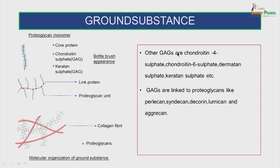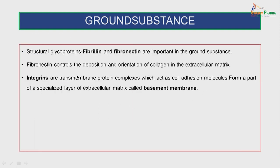Other glycosaminoglycans include chondroitin-4-sulphate, chondroitin-6-sulphate, dermatan sulphate and keratan sulphate. The glycosaminoglycans are linked to proteoglycans like perlecan, syndecan, decorin, lumican and aggrecan. The structural glycoproteins are fibrillin and fibronectin, which are important in the ground substance. Fibronectin controls the deposition and orientation of collagen in the extracellular matrix. The integrins are transmembrane protein complexes which act as cell adhesion molecules and form part of a specialized layer of extracellular matrix called the basement membrane.